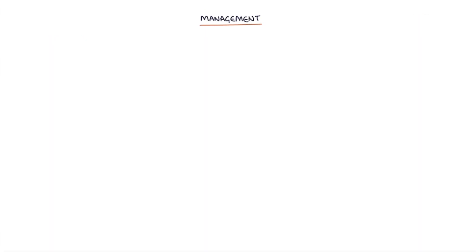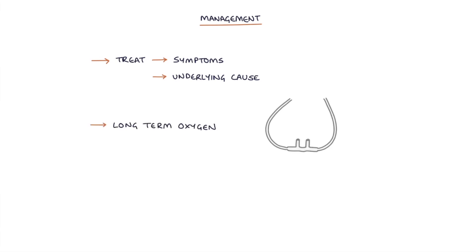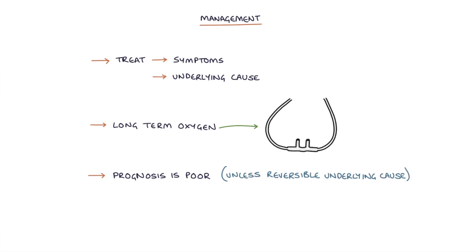What's the management of cor pulmonale? Management involves treating the symptoms and the underlying cause. Long-term oxygen is often used, but the problem with cor pulmonale is that it's quite an end-stage condition and the prognosis is quite poor unless there's a reversible underlying cause.